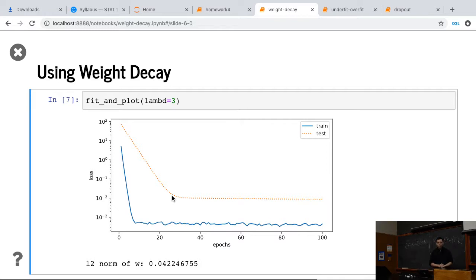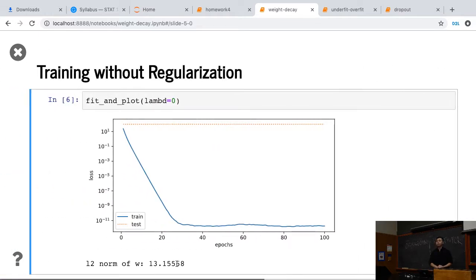But given that we still have only a few examples for this high-dimensional dataset, the model is still like we are still overfitting the data. But adding lambda actually decreases the test error a lot. And also, we can see that the L2 norm of W is pretty small compared to before.